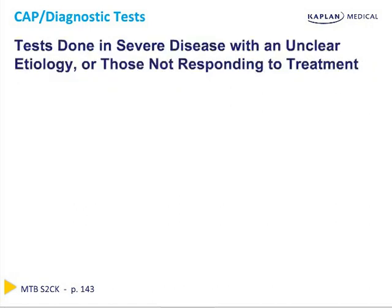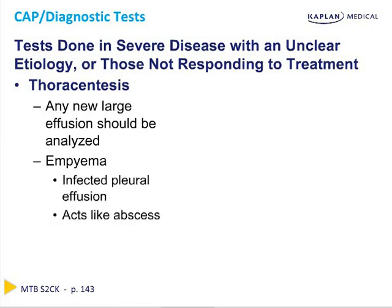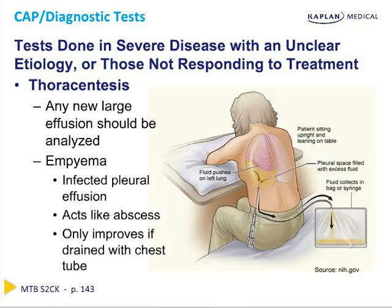Sometimes patients will have severe disease and will not respond to initial treatment, or the etiology remains unclear. In this situation, think about the evidence of a large pleural effusion. If you see an effusion on the chest x-ray and the patient is thought to have pneumonia clinically, you must perform thoracentesis. Any new large effusion seen on a chest x-ray should be analyzed. An infected pleural fluid is also known as an empyema, which basically acts like an abscess and therefore only improves if you drain it with a chest tube.